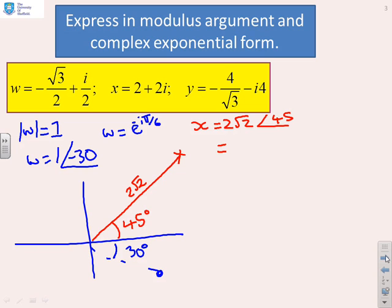And therefore I can write x equals 2 root 2 arg 45. Or if I use the exponential form, I can write 2 root 2 e to the i pi by 4. Clearly, in the exponential form, you must express the angle in radians.